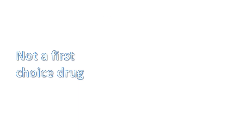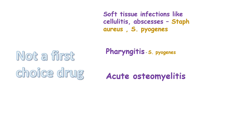First generation cephalosporins are never used as first-line therapy. They are active against MSSA and penicillin-sensitive streptococcus and used as an alternative to penicillin. They are often used for skin and soft tissue infections like cellulitis, abscesses, and wound infections caused by Staphylococcus aureus and Streptococcus pyogenes. They are also used as an alternative to penicillin or amoxicillin for pharyngitis caused by Streptococcus pyogenes.